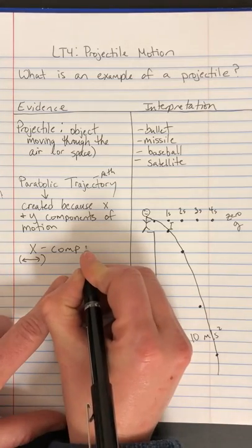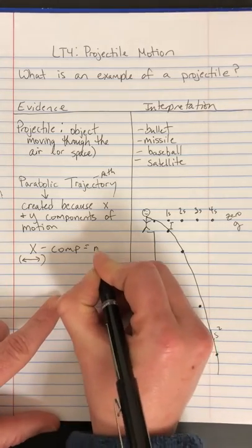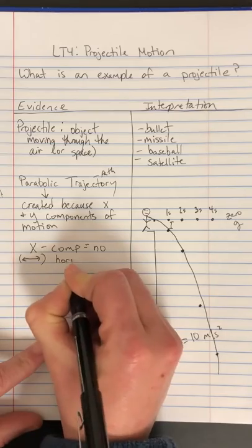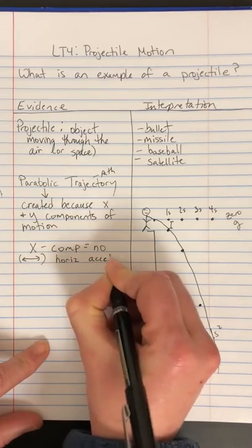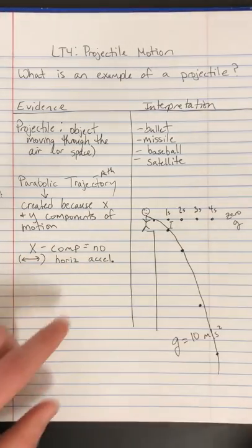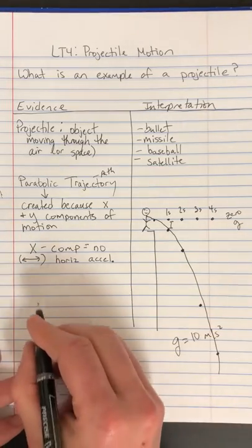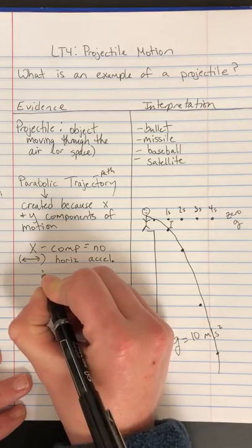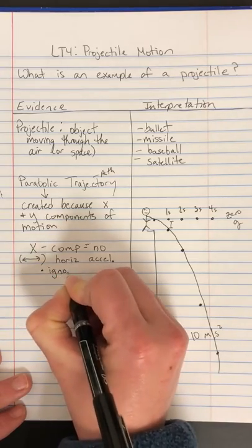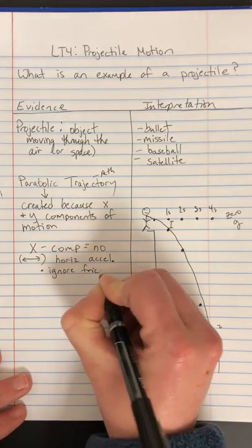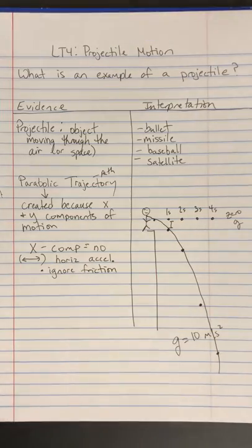So the X component, this part means there's no horizontal acceleration. There's no horizontal, remember acceleration is a change in velocity or change in speed. It doesn't do that because we are going to ignore air drag. We're going to ignore all types of friction. So therefore, once it leaves your hand, it's gone.